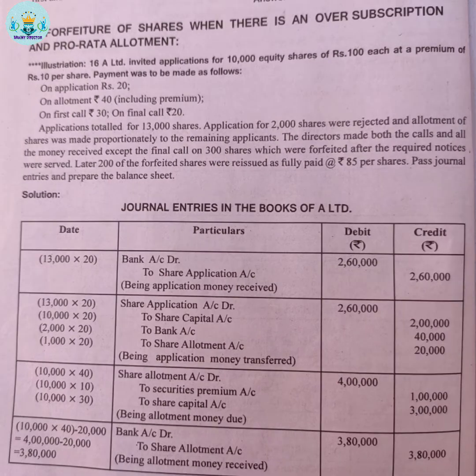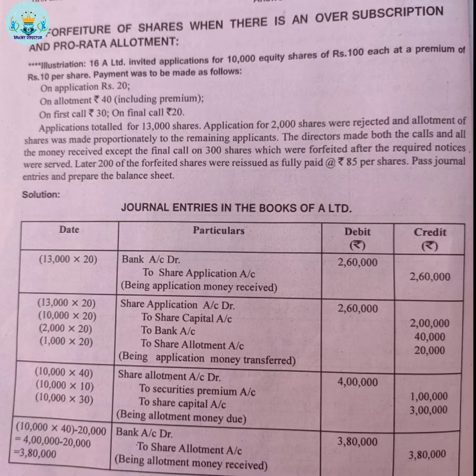There are 13,000 applications total. 2,000 applications are rejected. 1,000 applications are considered for allotment. They are allotted shares. If you share this, they will show you the ARM process. The ARM is going to be applied; you can use it.